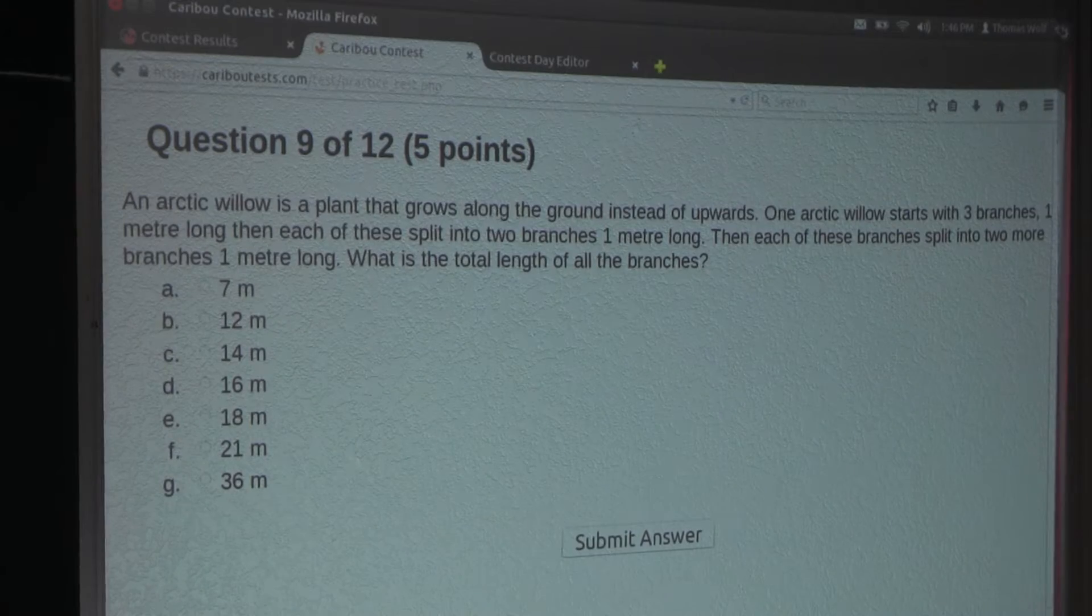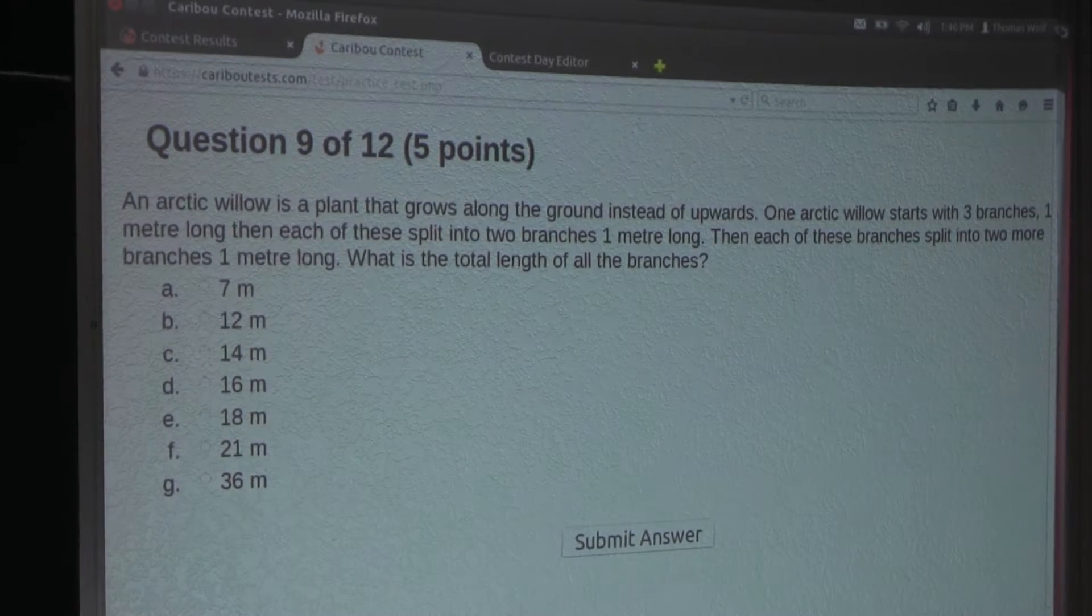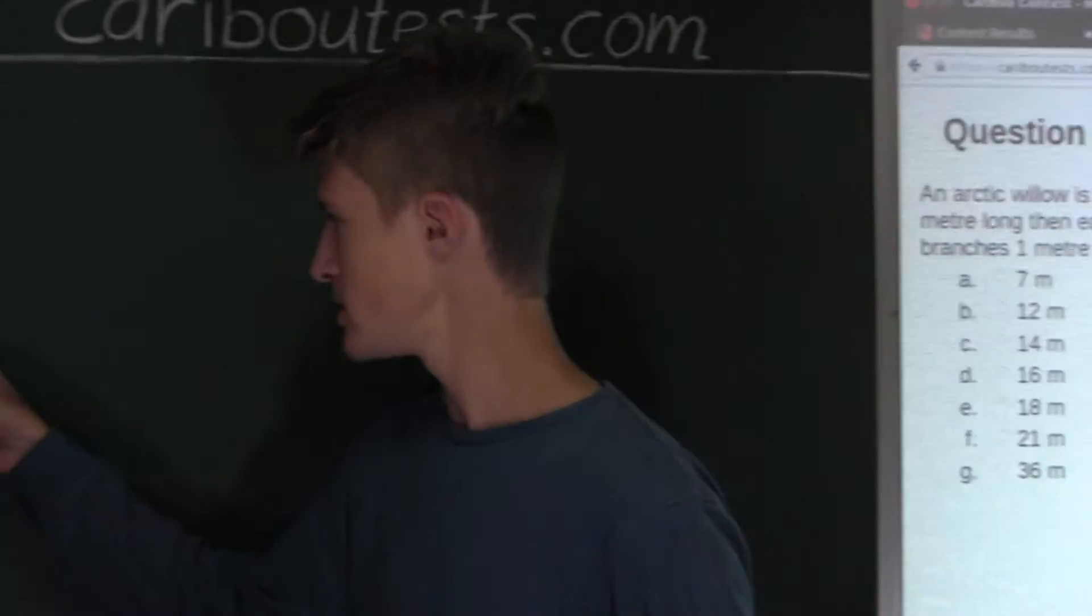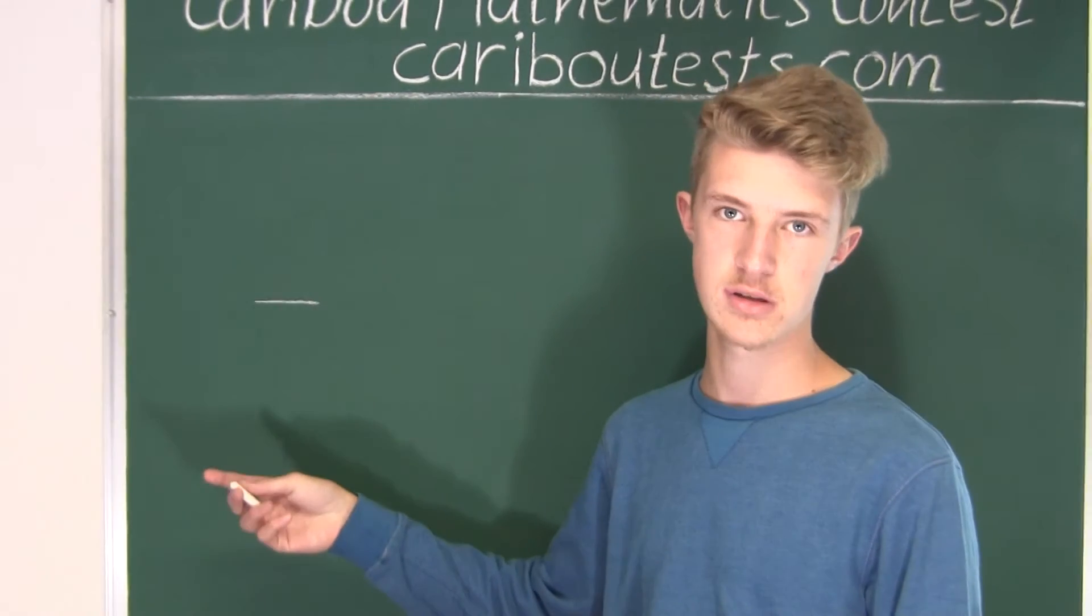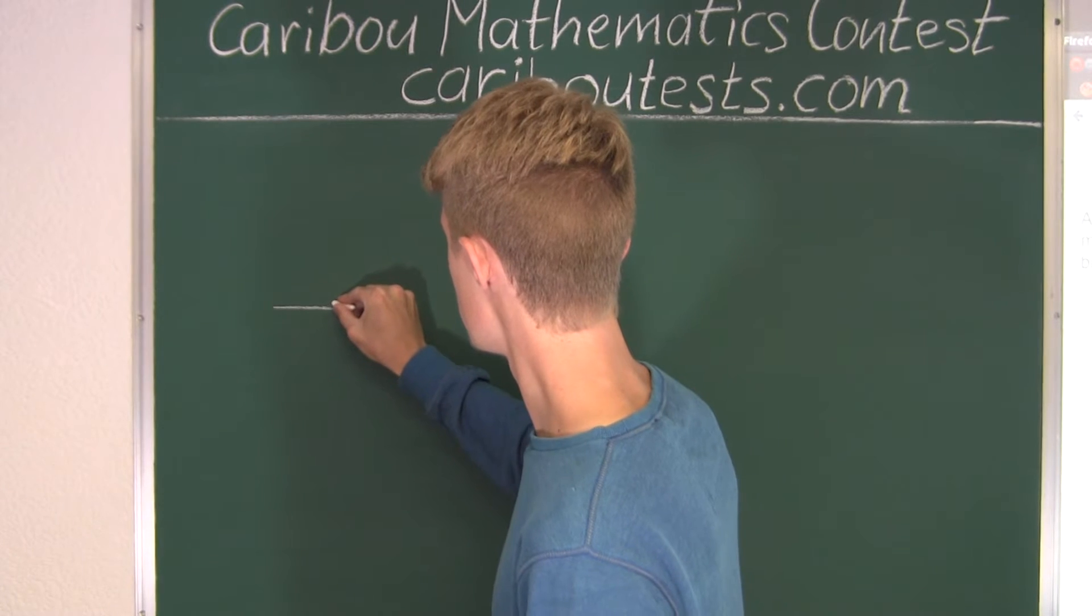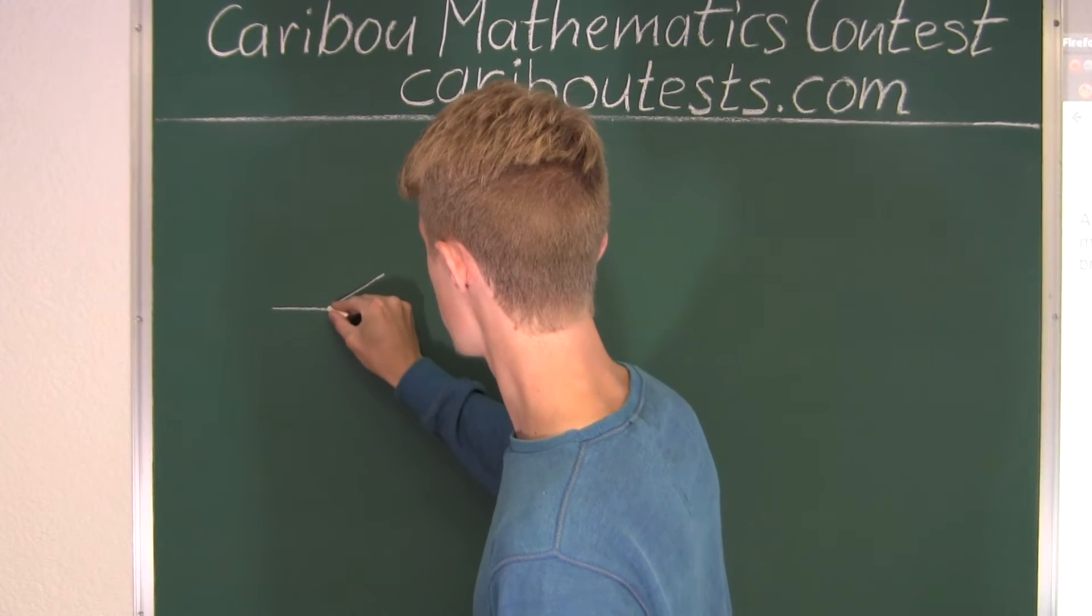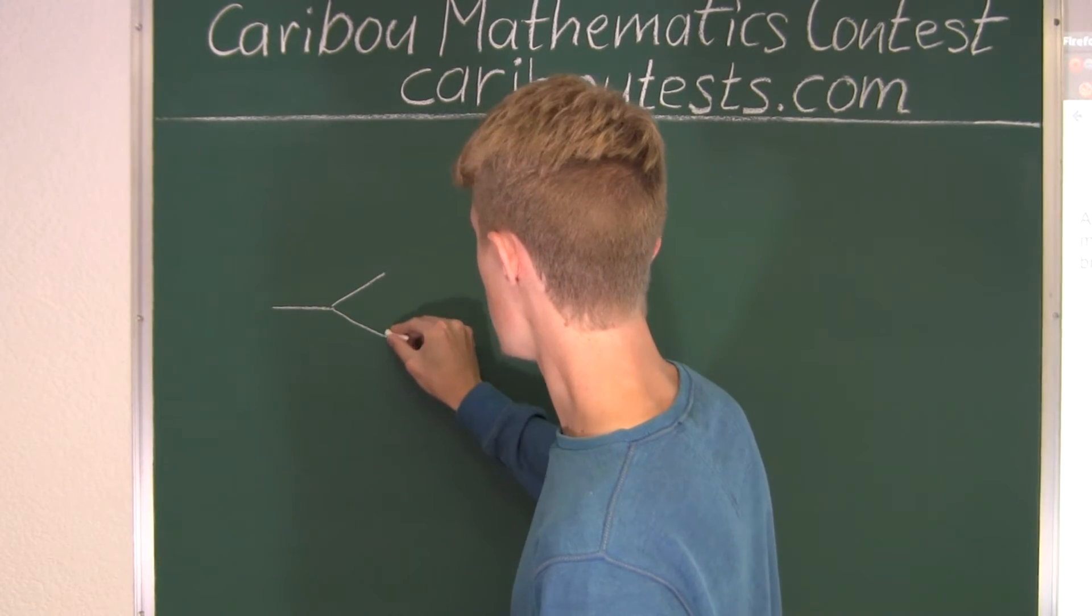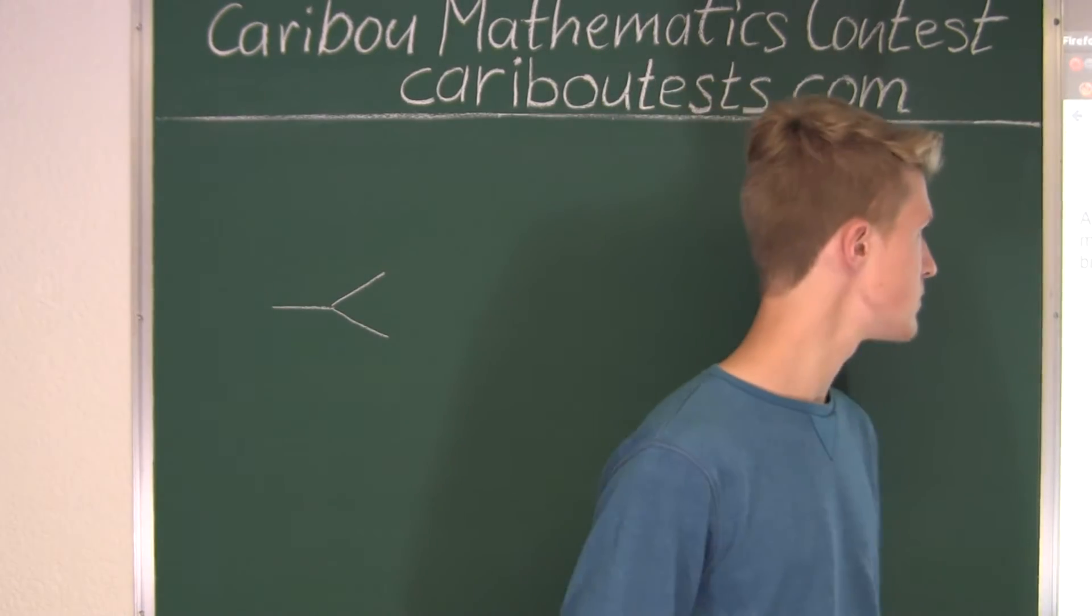Okay, then each of these split into two branches one meter long. So this one branch then splits into two more, also one meter long. So let's say this is about one meter long. And then this would be the same length. And that would also be the same length.